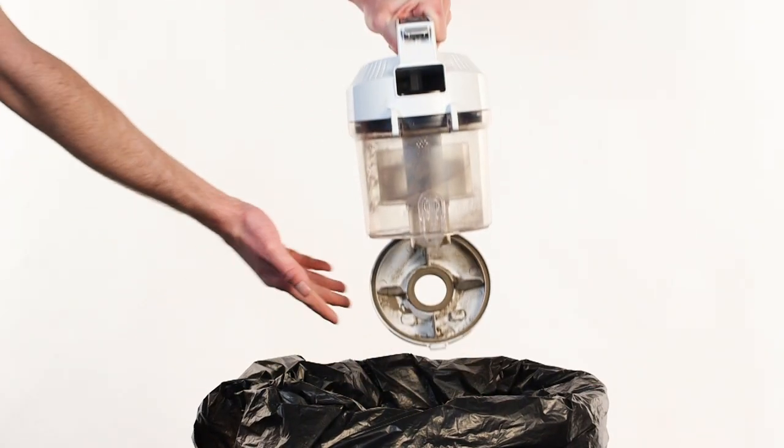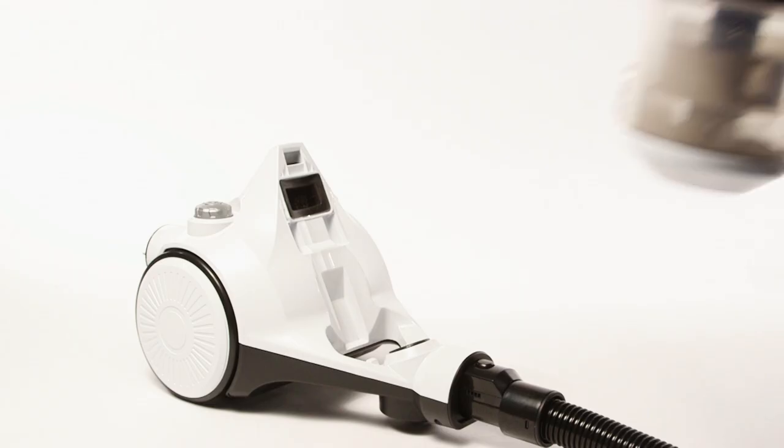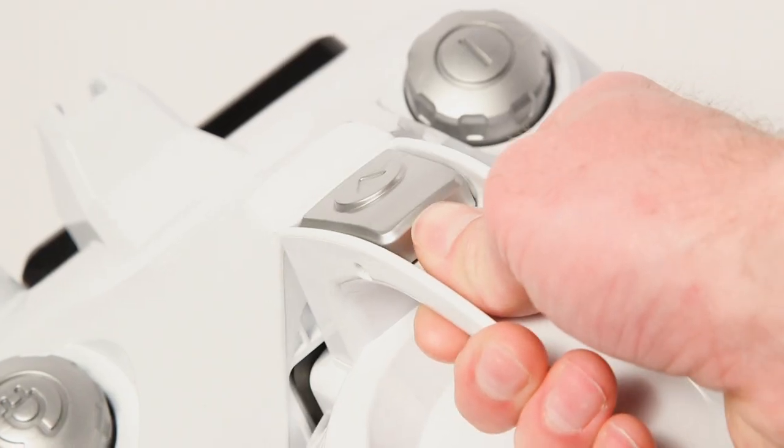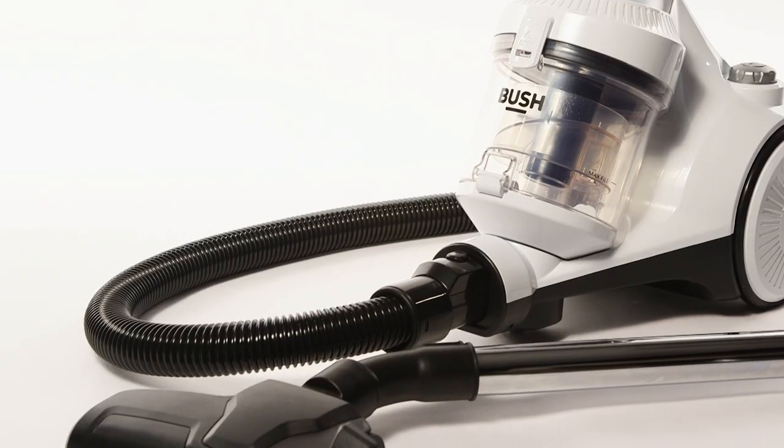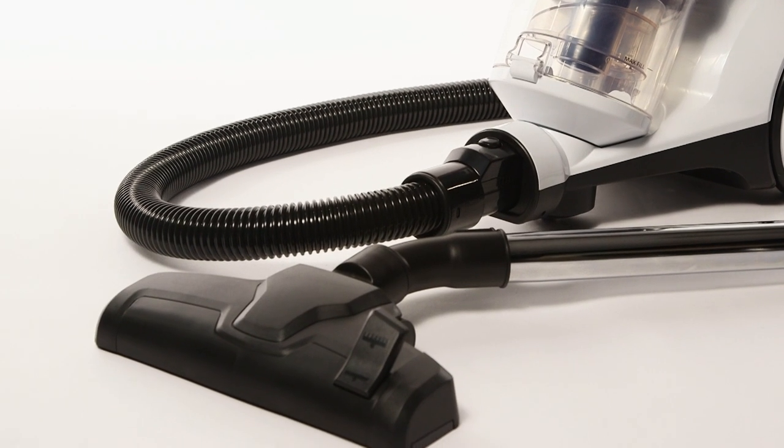Once emptied, close the flap and refit the container to the vacuum body. A click will be heard when it is correctly engaged. Your Bush Vacuum is now ready to use.